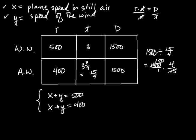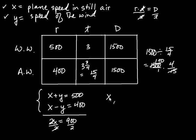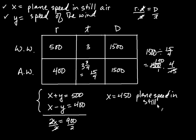Now you have a system of equations, and the easiest way to solve it is using the addition method — simply add the equations together. You get 2x equals 900. Dividing both sides by two gives x equals 450. That's the plane speed in still air. Since x plus y equals 500 and x is 450, then y equals 50. That's the speed of the wind.